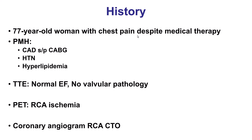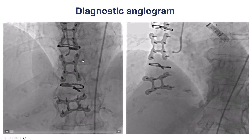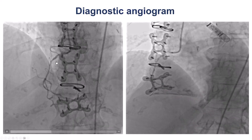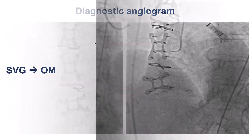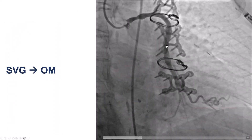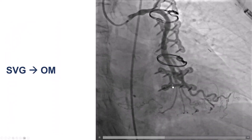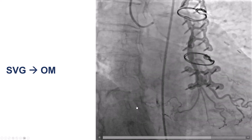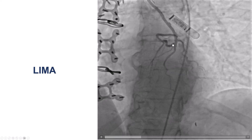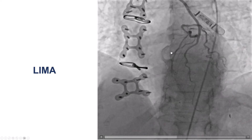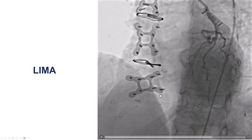The patient was a woman with previous coronary bypass who presented with angina, was found to have inferior ischemia and a right coronary artery CTO. The RCA is diffusely diseased with occlusion distally. There is a patent vein graft going to the obtuse marginal with epicardial collaterals to the right, and a LIMA to LAD supplying the diagonal and giving some septals to the right as well.